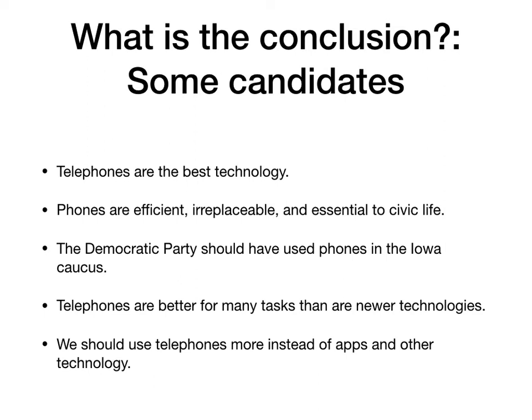The first thing you want to do when analyzing an argument and its structure is to find the conclusion and kind of work backwards. So what's the conclusion of this argument? There are some really big, grand things he says about phones. 'Telephones are the best technology' — it's right there in the title, he says it a couple of times. 'Phones are efficient, irreplaceable, and essential to civic life' — he says that at another point. We might ask, does he explicitly state the conclusion?